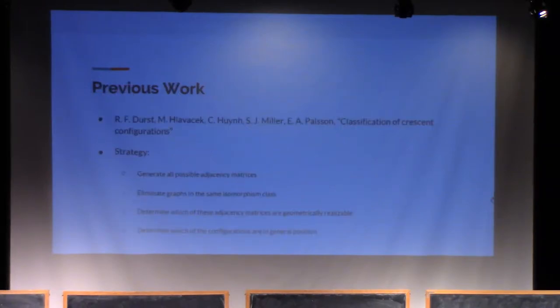Our main reference for the project was work by some students under A.V. Pallison, in which they attempted to classify Crescent configurations on four and five points. The general strategy was as follows. The first thing to notice is that instead of viewing them as points in the plane, you can view them as labeled graphs.